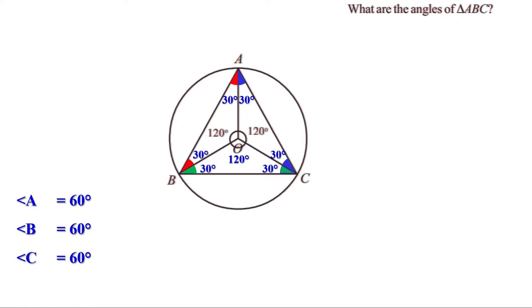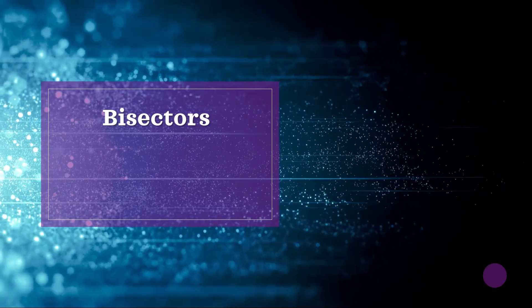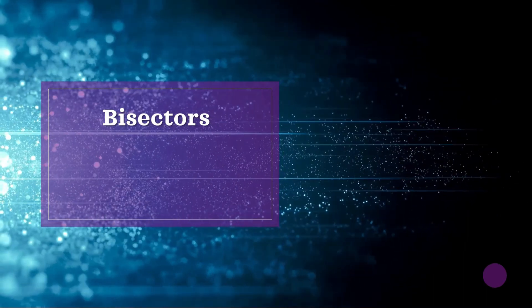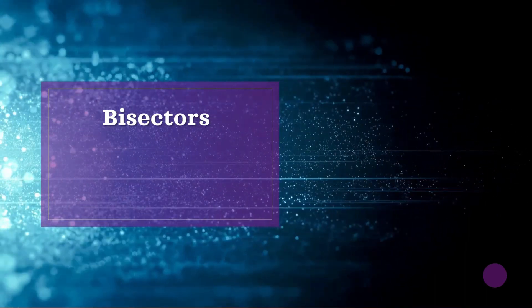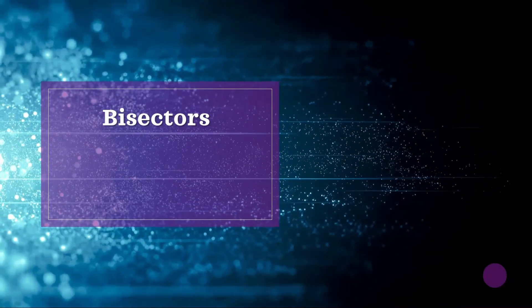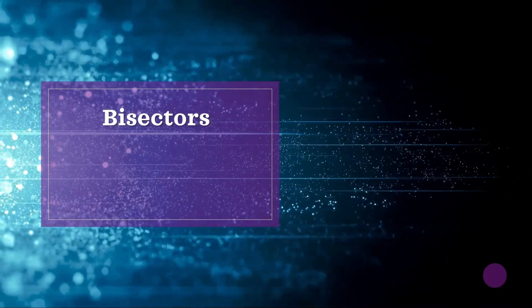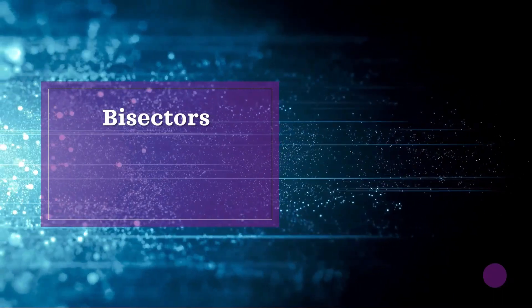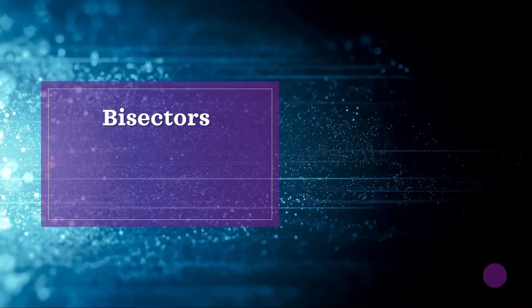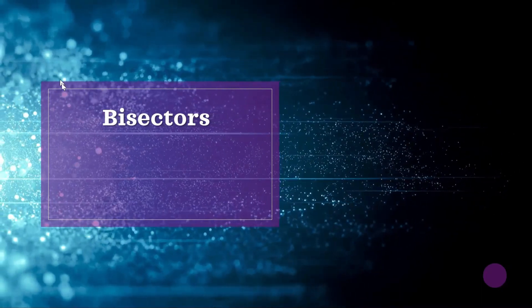We have seen different types of lines. Lines are used to make triangles, rectangles, etc. Today we are going to learn a particular type of line called bisectors. A bisector is a line which divides another line or an angle into two equal parts.